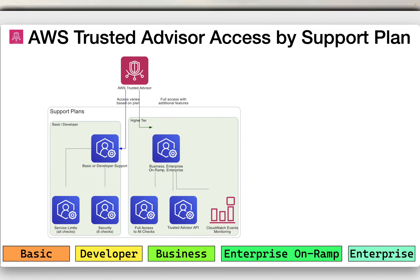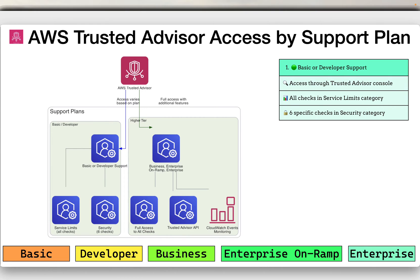Trusted Advisor access depends on your support plan. There are five different plans: basic, developer, business, enterprise on-ramp, and enterprise. Basic is available to everyone by default with an AWS account. With a basic or developer support plan, you can access all checks in the service limits category and six specific checks in the security category. This is free of cost.